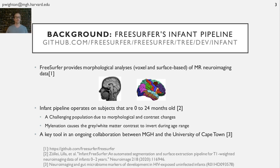The infant pipeline operates on subjects that are 0 to 24 months old, which is a challenging population due to the morphological and MR contrast changes during this time period. FreeSurfer's infant pipeline is a key tool in an ongoing collaboration between Massachusetts General Hospital and the University of Cape Town to study how the gut microbiome and human milk oligosaccharides mediate the impact of maternal HIV infection and antiretroviral drug exposure on infant brain development.